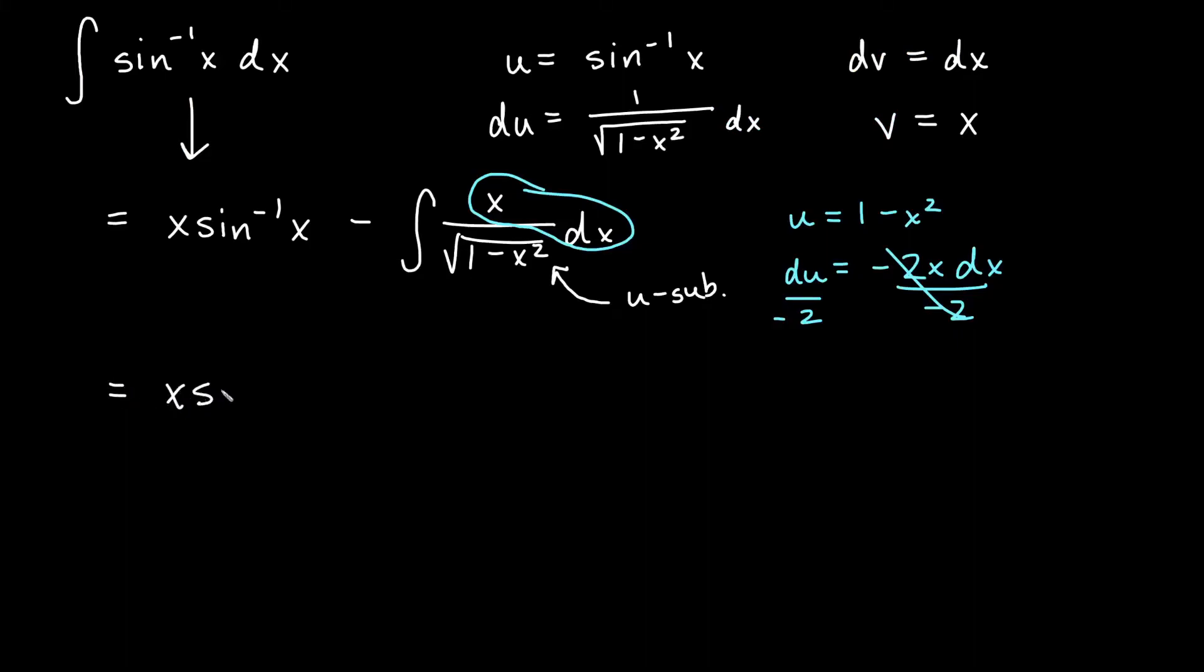All right, let's write down what we have then x inverse sine of x. So if I have a minus and then I have negative a half, I'm going to go ahead and say plus one half integral du over the square root of u.